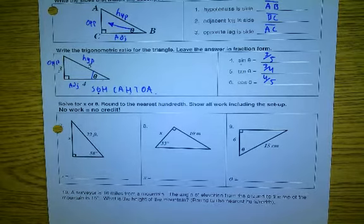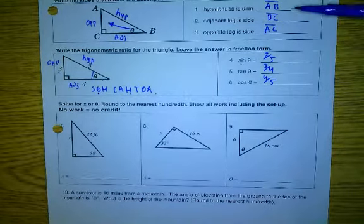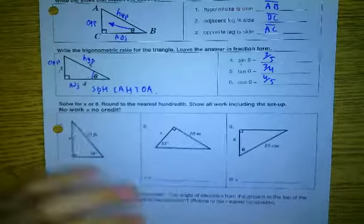For tangent, tangent is opposite over adjacent. So opposite is 3, adjacent is 4, three over four. And last but not least, cosine. Cosine is adjacent over hypotenuse. Adjacent is 4, hypotenuse is 5. So that should have been the answer for the first six problems.